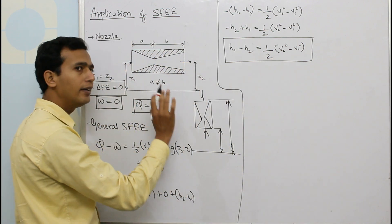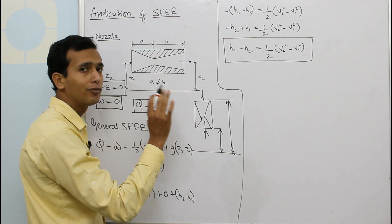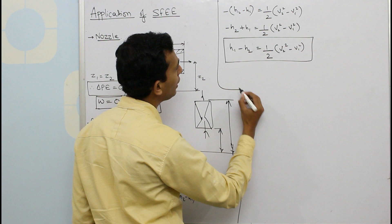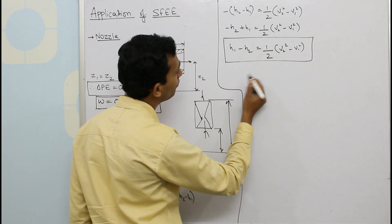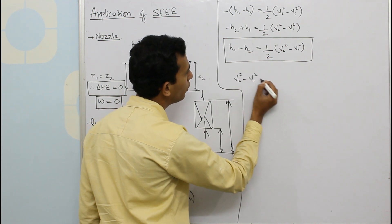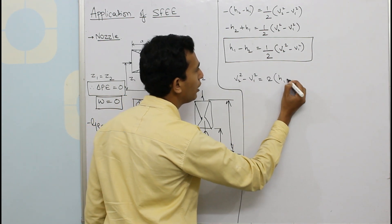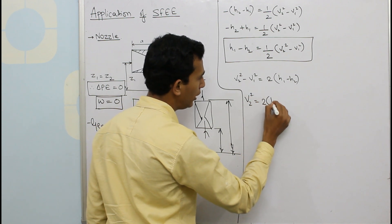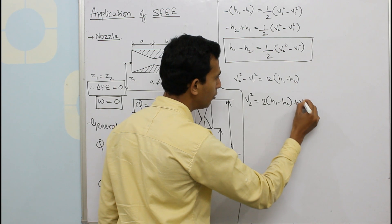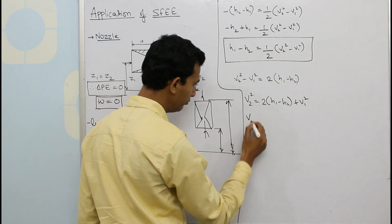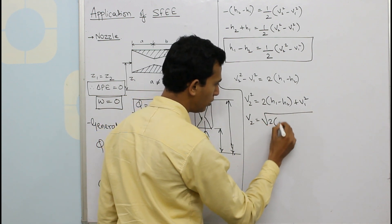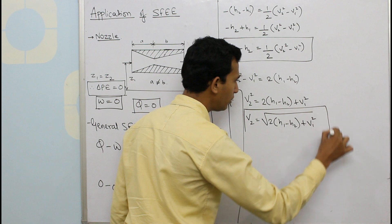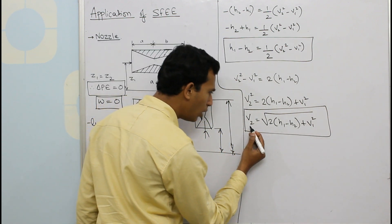Basically, a nozzle deals with the change in velocity of a flowing fluid. We can rewrite the equation in terms of outlet velocity: rearranging gives V2 squared minus V1 squared equals 2 times (H1 minus H2), then V2 squared equals 2(H1 minus H2) plus V1 squared, and taking the square root, V2 equals the square root of 2(H1 minus H2) plus V1 squared.